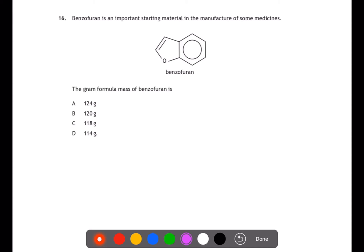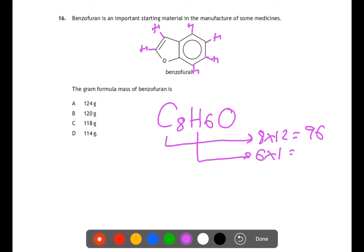Question sixteen. Benzofuran is an important starting material in the manufacture of some medicines. You need to find the gram formula mass of benzofuran. What this is testing is your knowledge of skeletal formula. I'm putting in where the hydrogens should be. So we have a benzene ring here. On each of these carbons we have a hydrogen. There's no hydrogens here and here because we already have a bond to something else. We have another hydrogen here and another one here. We can count up the carbons: one, two, three, four. So this means that the formula that we have is C8H6O. And now we simply calculate gram formula mass using the data book to help if required. So C is the answer.